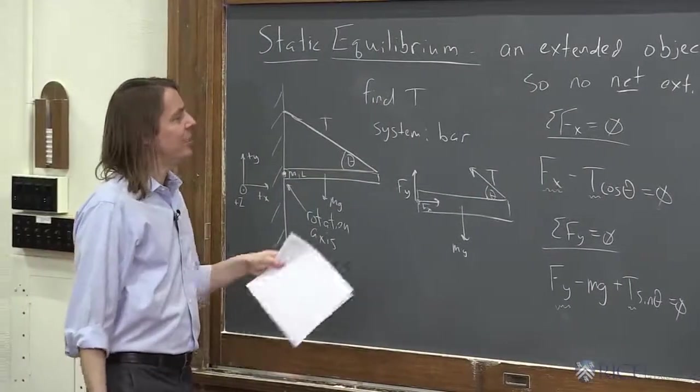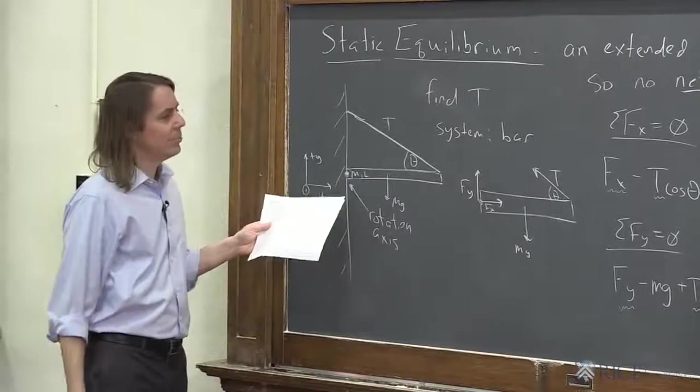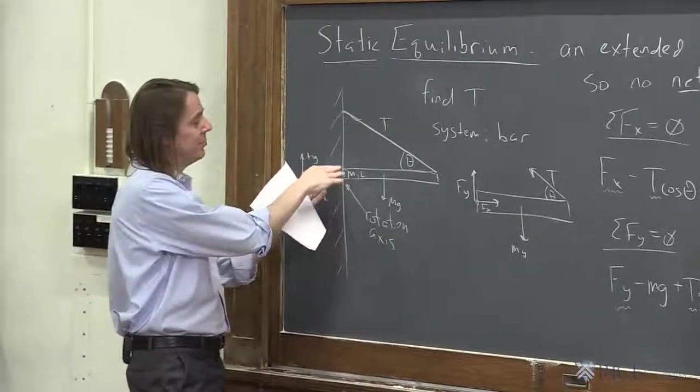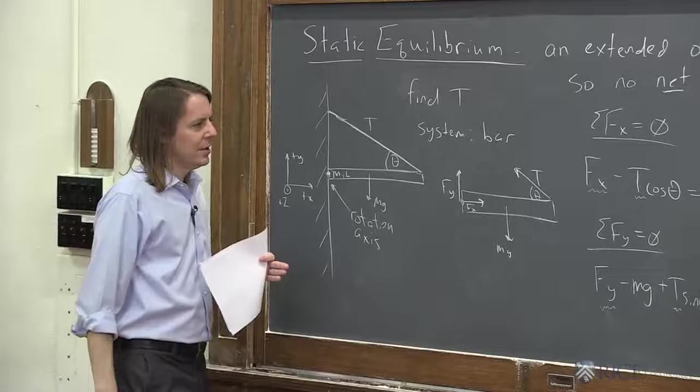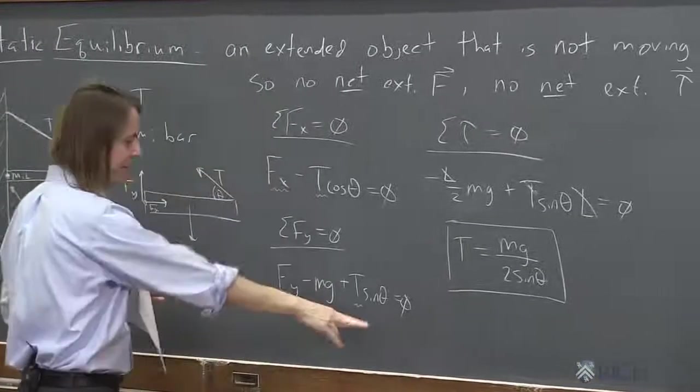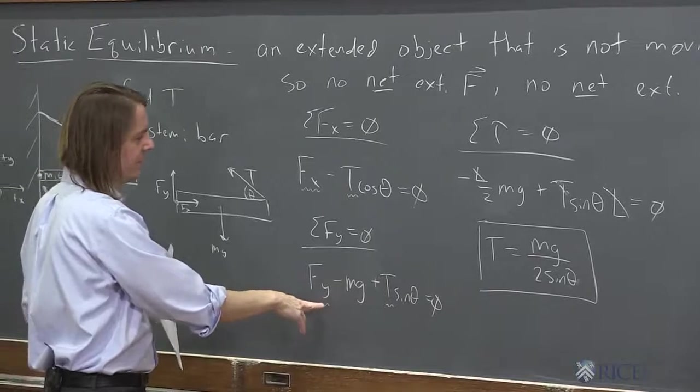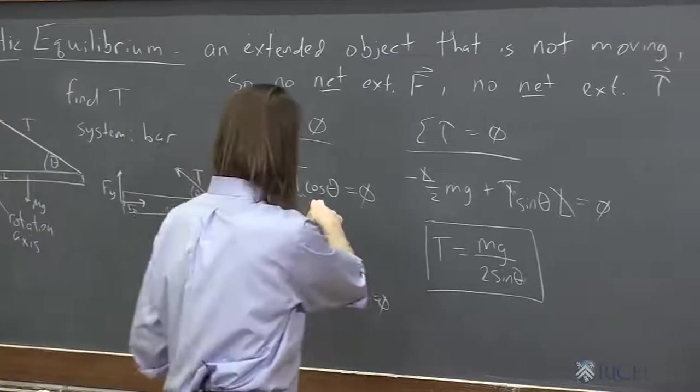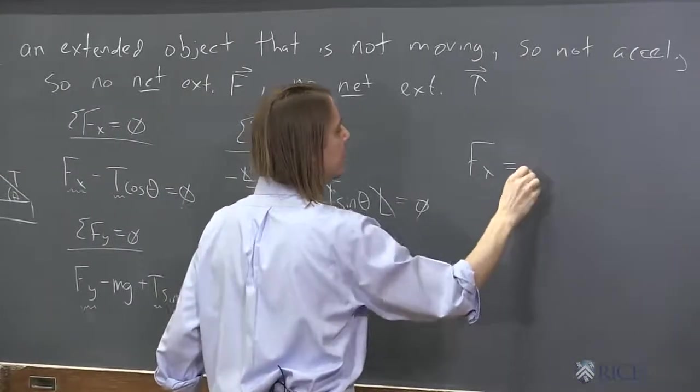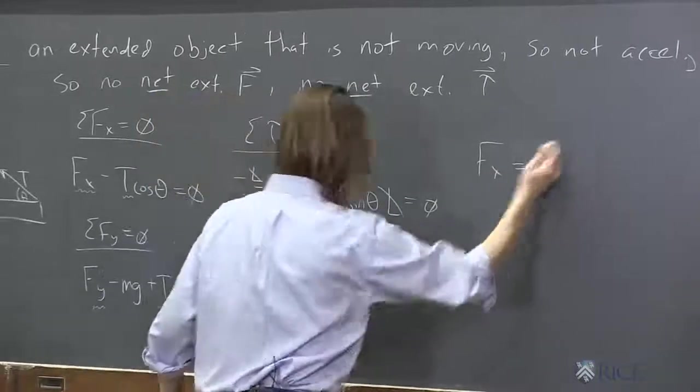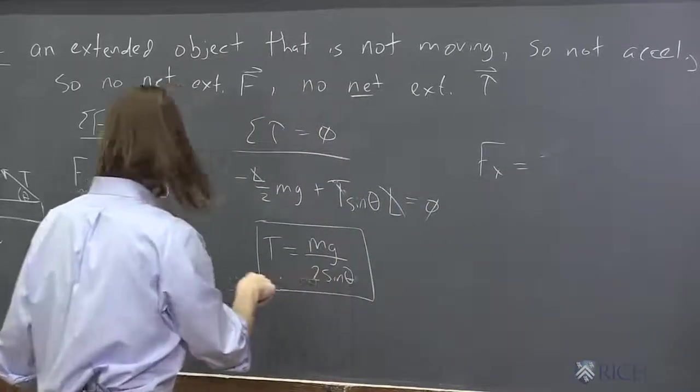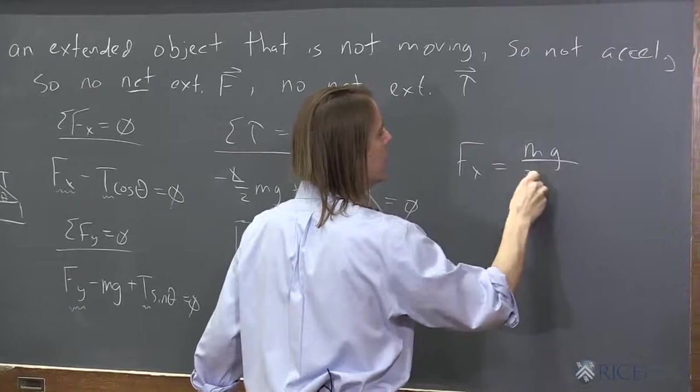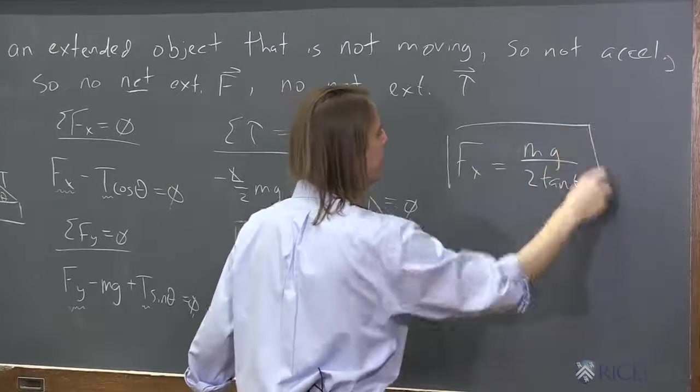But just for fun, we could finish the problem. We could say also, what are the forces that the building applies to the bar? Because you might need to know, like, what kind of a little pivot you need to put in there? What forces can it take? So you just start plugging this back into here. So this one just has Fy in it. Well, this one's easier because there's no mg term. We'll do this one first. Fx equals T cosine theta. So Fx equals T, which was mg over 2 sine theta, but times cosine theta. So it's mg over 2 tangent theta. So there's the force the building applies.